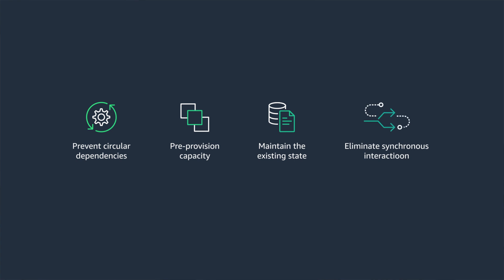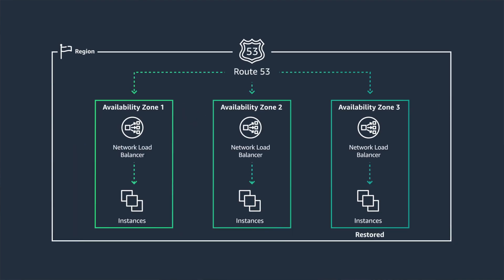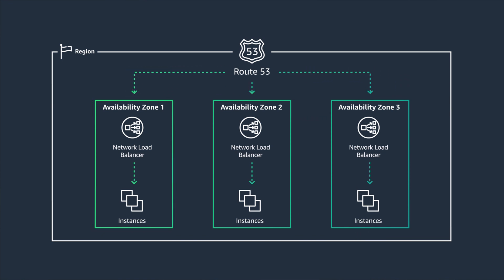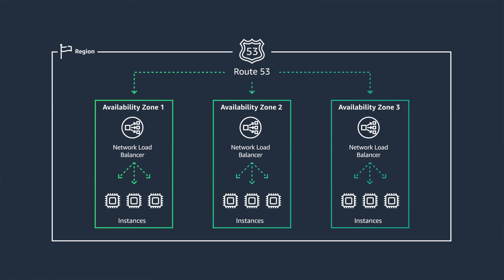This is an example of a statically stable system. If you go this route, DNS will essentially dictate how much load shows up in each AZ. You may experience some unevenness, so it's important to make sure you have equal capacity in all AZs. Designing a system based on the minimum healthy target count for your workload is a good way to measure that. Also, plan so that you have enough capacity to sustain loss of one AZ.